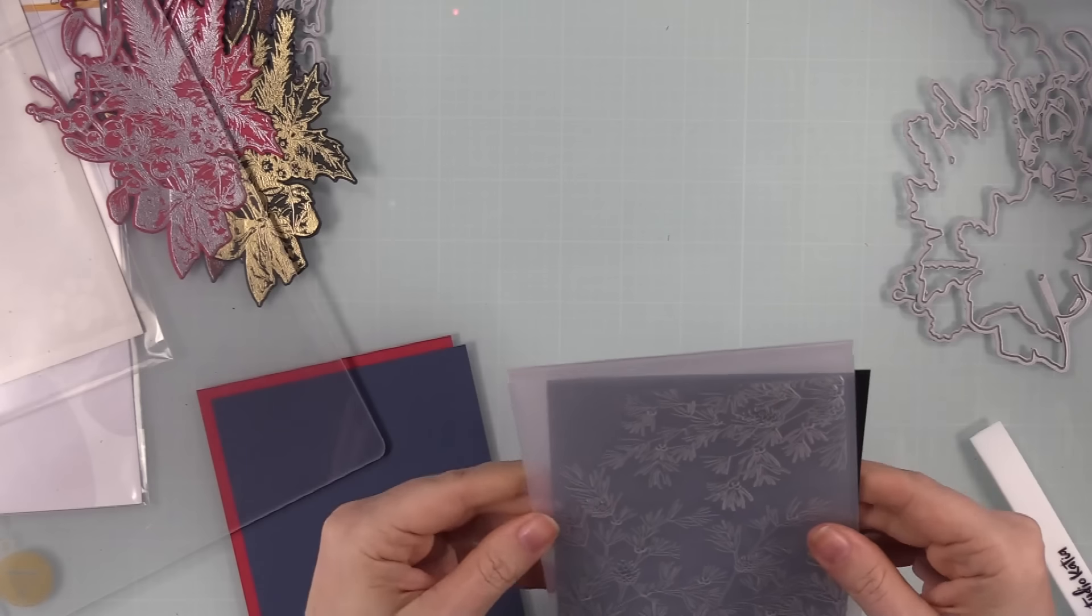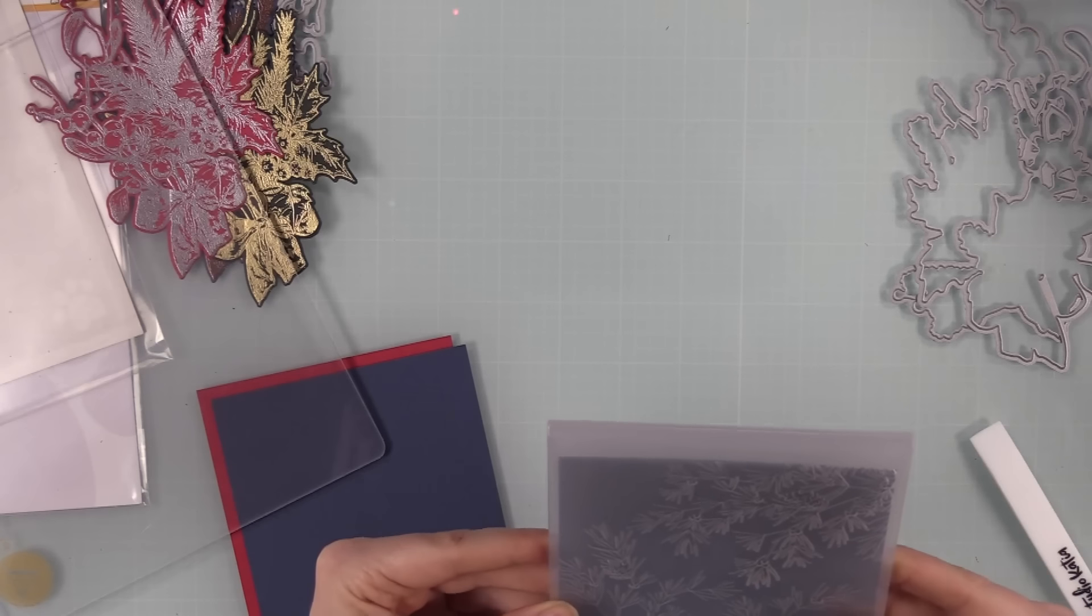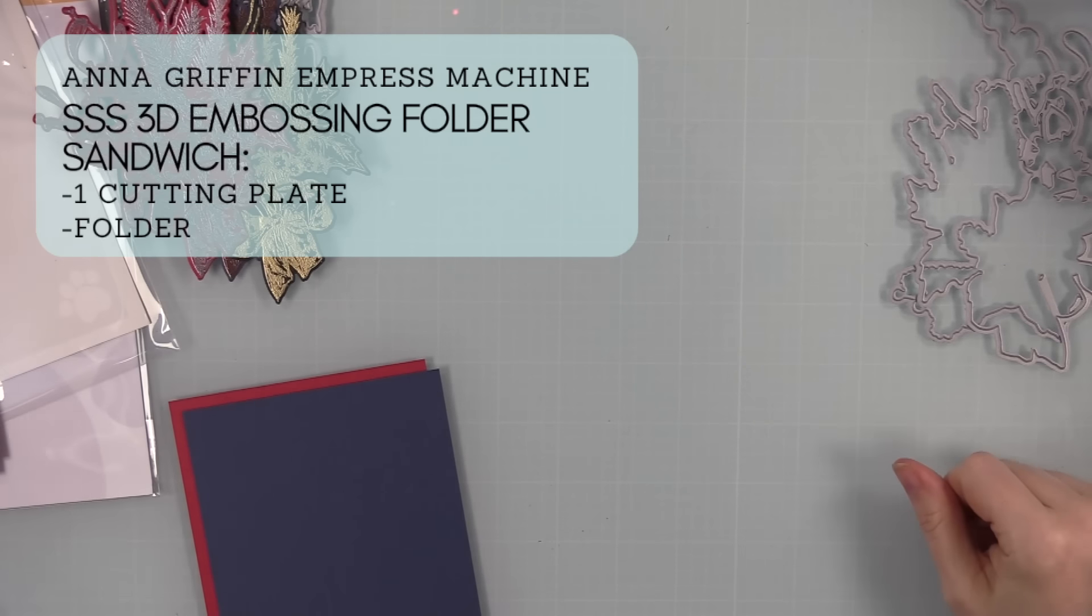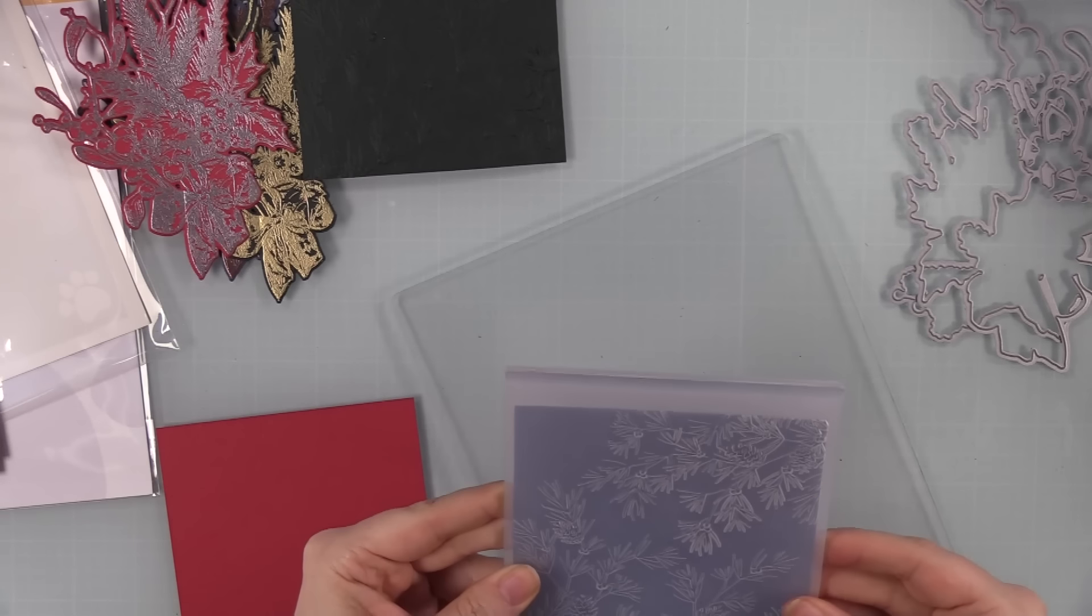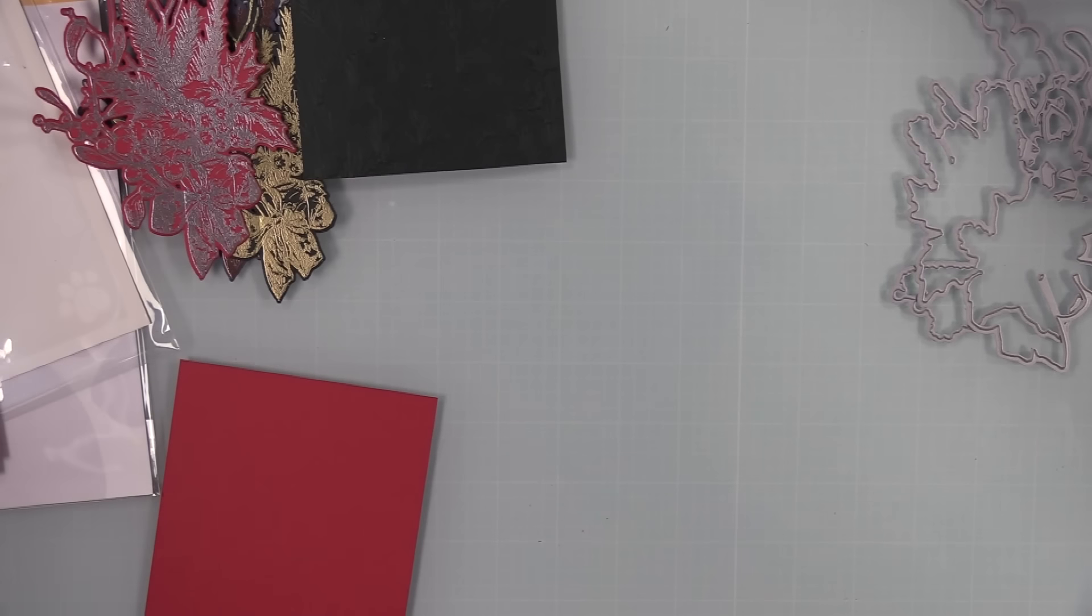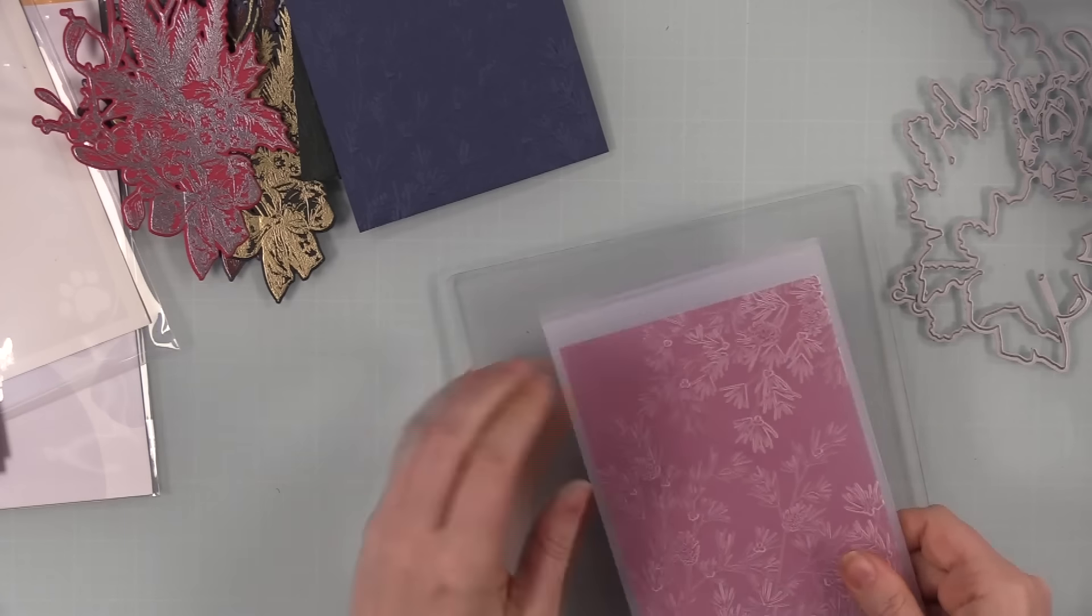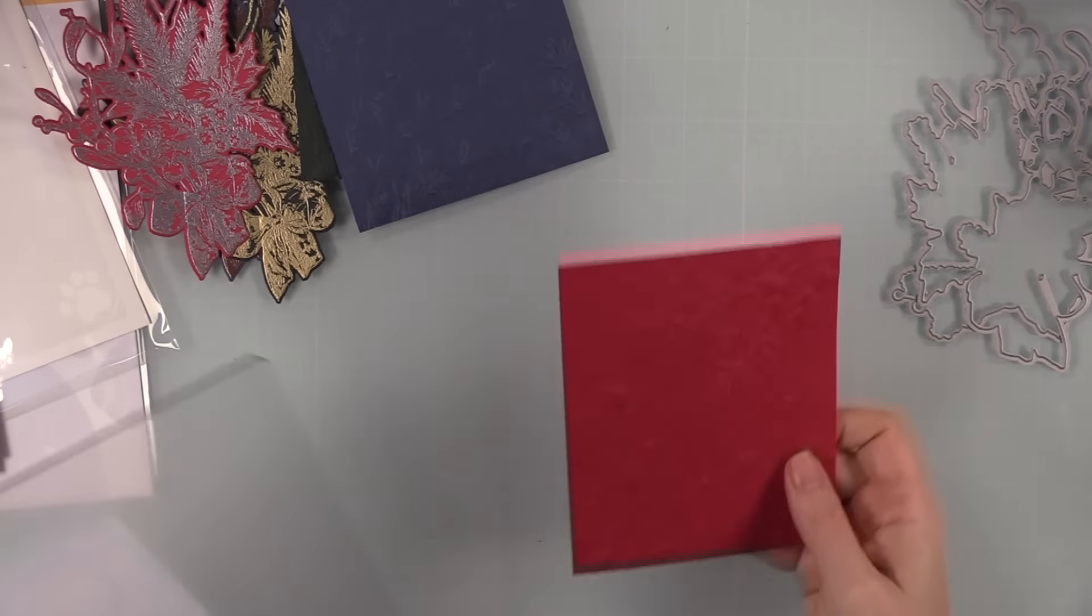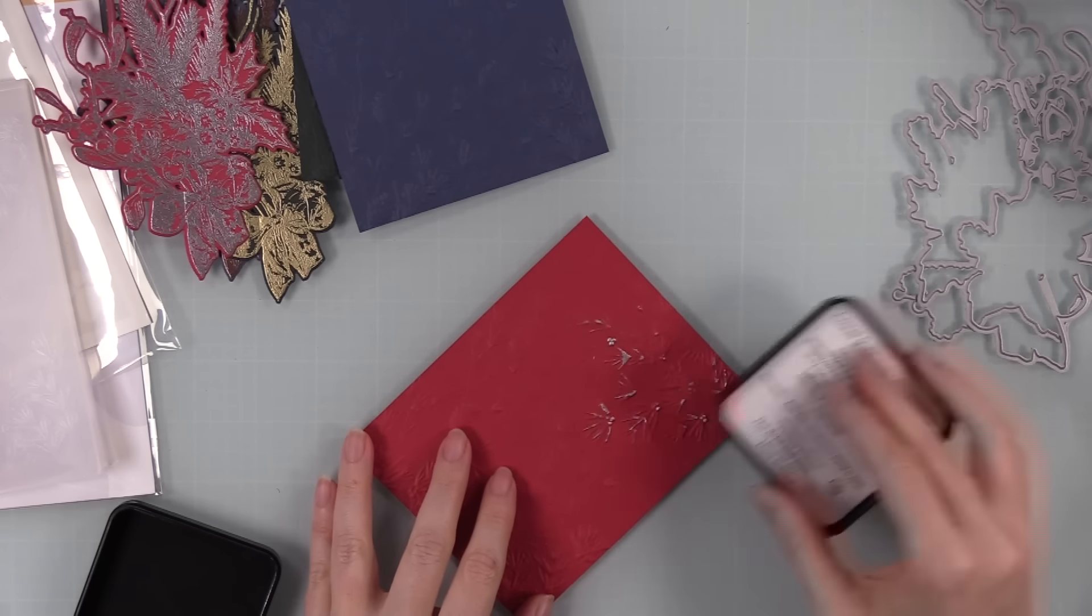Once these were die cut, I took the other A2 sized panels of the same card stocks and I'm going to run these through with the Fir Tree Branches embossing folder. This came out a couple years ago, I've done other videos using this. It's one of my favorites. It is a much more subtle pattern than some 3D embossing folders. For these ones I did not spray my card stock with water. If you find your card stock is cracking when you run it through an embossing folder, mist it with water. A light mist of water will soften those paper fibers, but with a folder like this I found that I didn't need to do any misting.